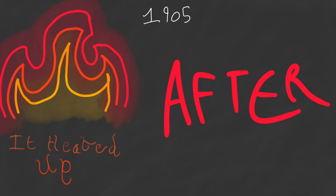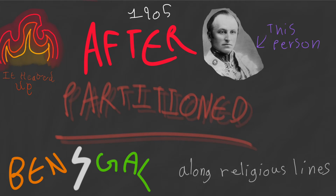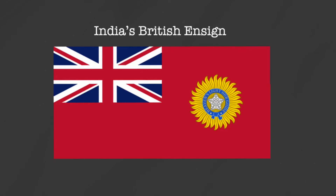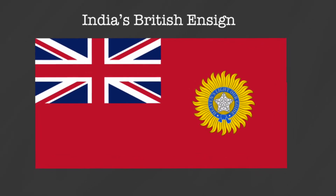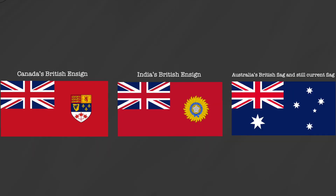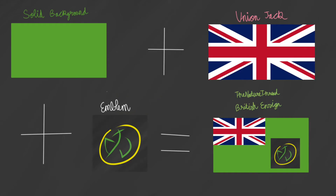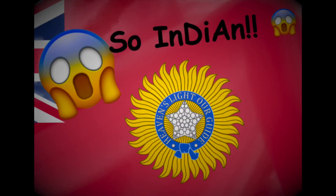Meanwhile, discussions about a national flag heated up around 1905 when Viceroy Curzon decided to partition the province of Bengal on the basis of religion. Before this point, India did have a flag, but it was a British ensign — like Canada or Australia, or basically any British colony — with a solid colored background, a Union Jack canton, and a symbol to represent the colony, India's being a star.